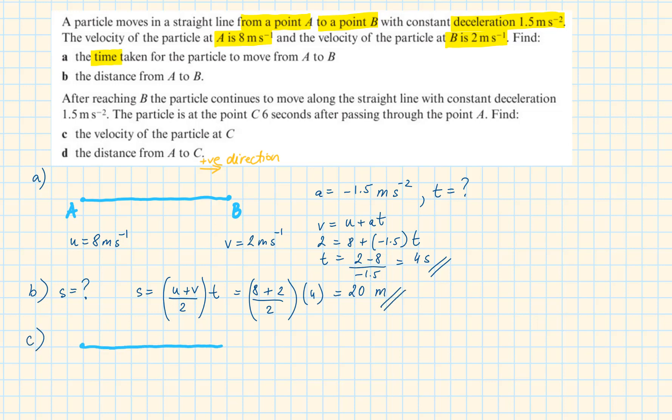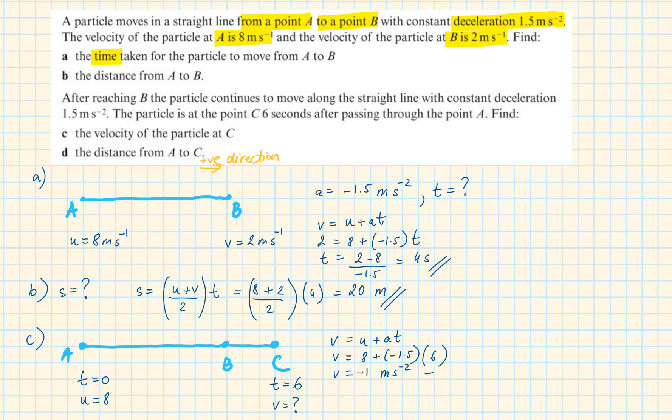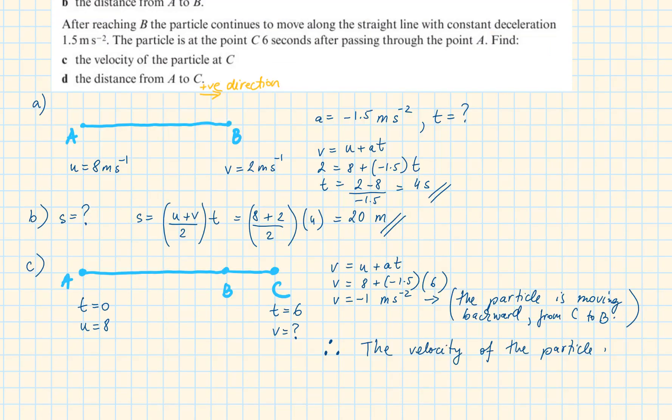For part C, we have a change in situation. We know that it took 6 seconds to get from A to C. The question is what is the velocity? Using the formula V equals U plus AT, replacing the values, we know that U is 8, A is minus 1.5. Remember, direction matters, so A is equal to negative. The final velocity at C is equal to minus 1 meter per second. This means that the particle is moving backwards, is going from right to left, from C to B.